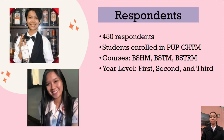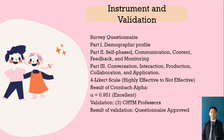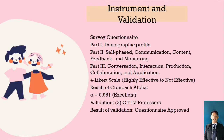Of 450 respondents currently enrolled at PUP, the study is limited to first-year, second-year, and third-year students at CTHDM of PUP. Instrument and Validation: Part 1 is the demographic profile. Part 2 is the level of effectiveness of e-learning theoretical output on hospitality skills at Polytechnic University of the Philippines. Part 3 is the level of effectiveness of e-learning laboratory output on hospitality skills at Polytechnic University of the Philippines. A Likert scale was used ranging from highly effective to not effective. The result of Cronbach's Alpha is equal to 0.951, validated with three evaluators, and the questionnaire was approved.